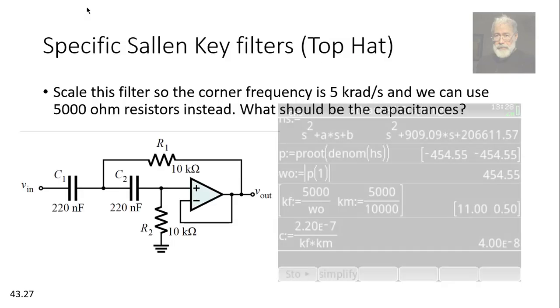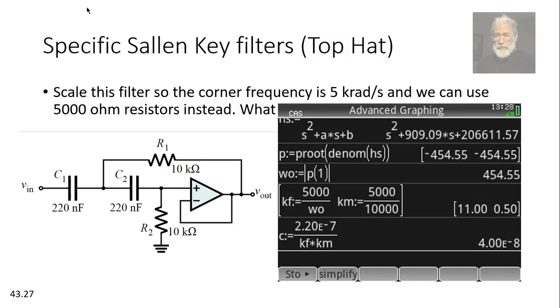Now we can find kf. We know what is the original corner, omega 0, 454. Kf is the new frequency, 5000 divided by the old frequency, 454. That is 11. Now we know kf, 11. We have km, 0.5. The new capacitance is 220 nF. Nano is 10 to the negative 9. 220 nF divided by kf and km. That is 40 nF. And that is the answer.